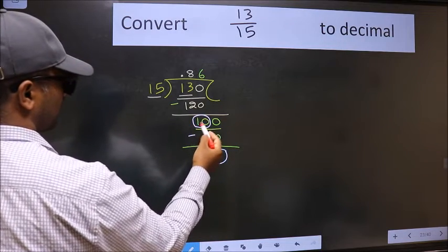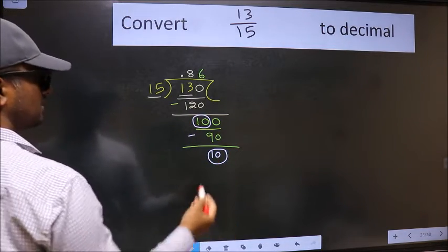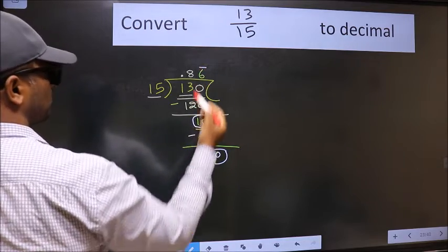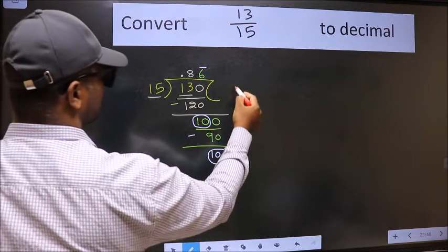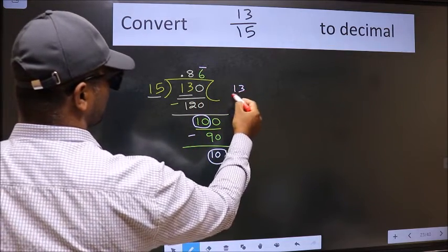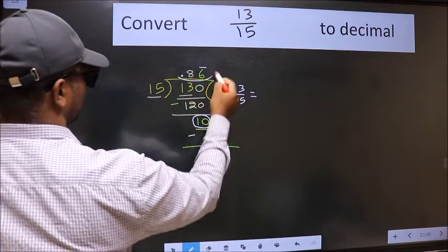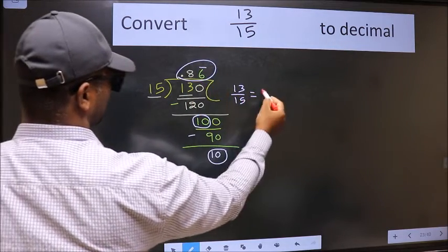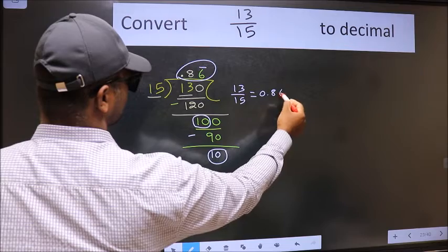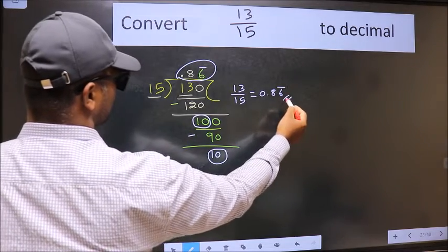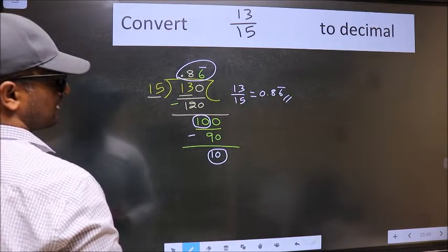Earlier also we got 10. That means we get a bar on this number. Therefore, the decimal of 13 by 15 is 0.86 bar. This is our answer: 0.86 bar.